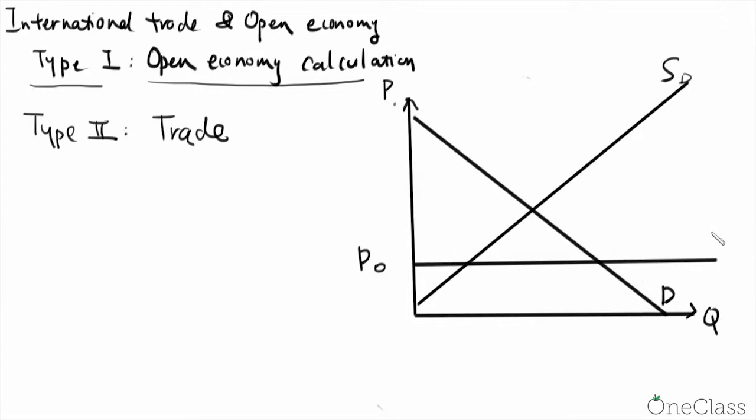And here, SF is foreign supply at price P0. So if I am the normal consumer, without trade, the equilibrium point will be point A here at price P star.